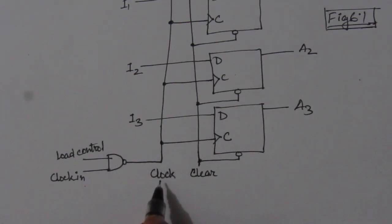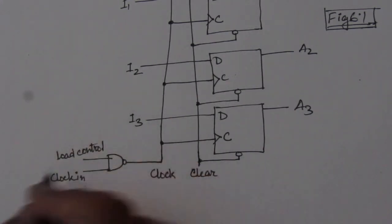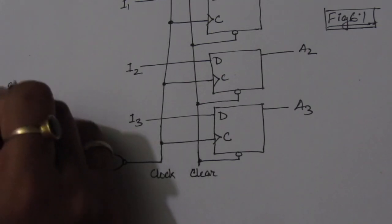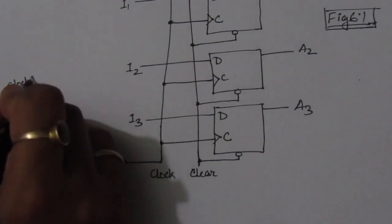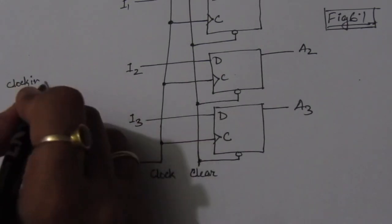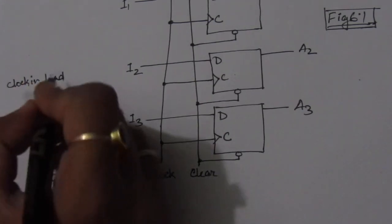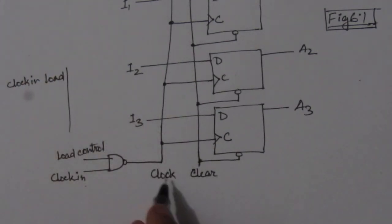So if we make this truth table of this clock signal for this NAND gate, so here we will have one is the clock_in, clock_in, so another input is load, load control.